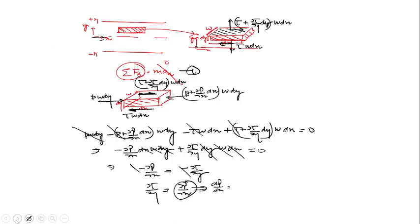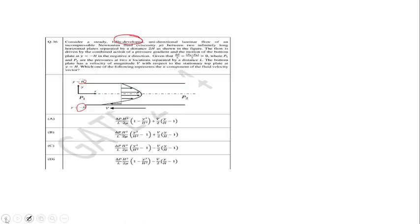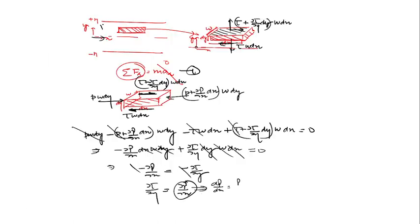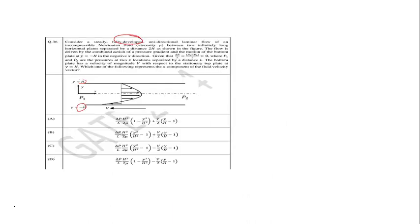Since pressure drop does not vary, we write dp over dx as p2 minus p1 over l. In the answer notation, this is written as minus delta_p over l where delta_p equals p1 minus p2. So the governing equation becomes: del_tau over del_y equal to minus delta_p over l, and since tau equals mu times du over dy, we get del over del_y of (mu du over dy) equals minus delta_p over l.